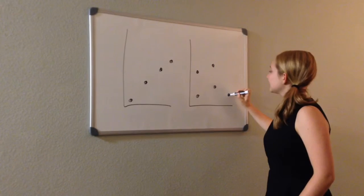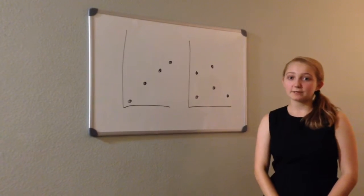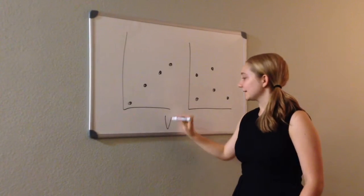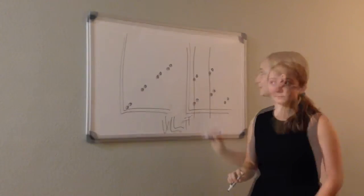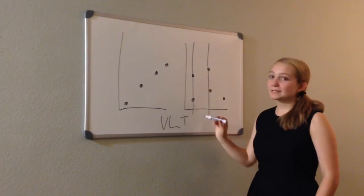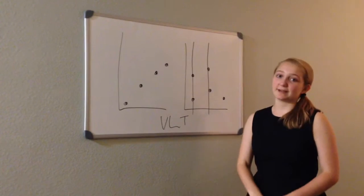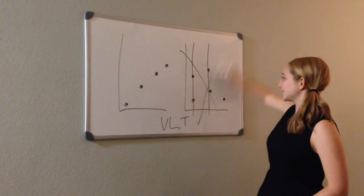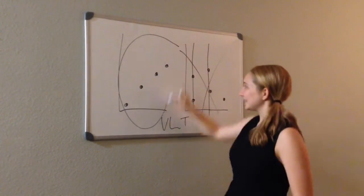One easy way to determine if something is a function or a relation is by doing the VLT, or vertical line test. If a line has multiple points on it, that means that you have multiple X values, and it is not a function. But this one is.